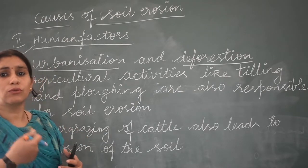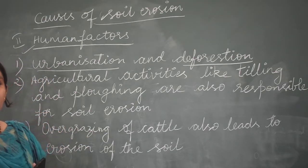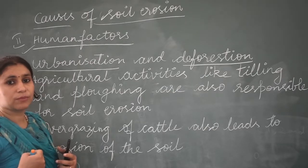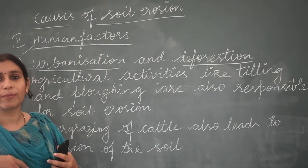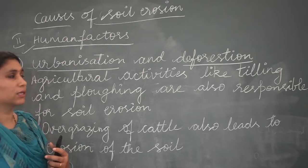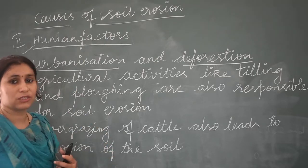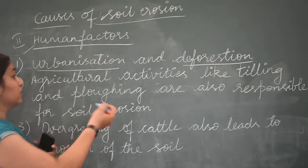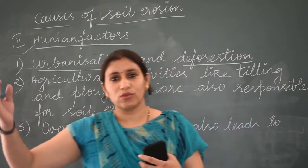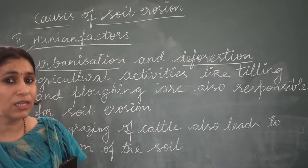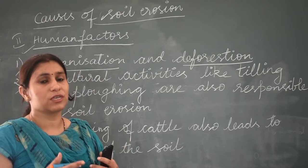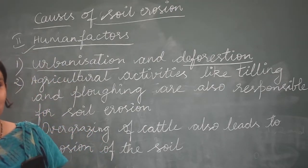Urbanization means to make a city — to make such places where there are forest areas or natural vegetation, to cut it and to make buildings and big malls. So what is urbanization? Urbanization leads to deforestation. We call this deforestation.